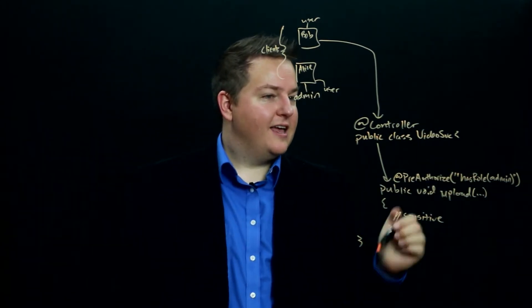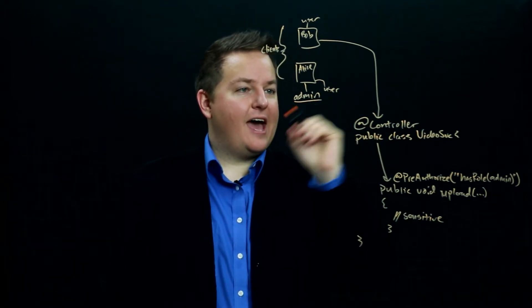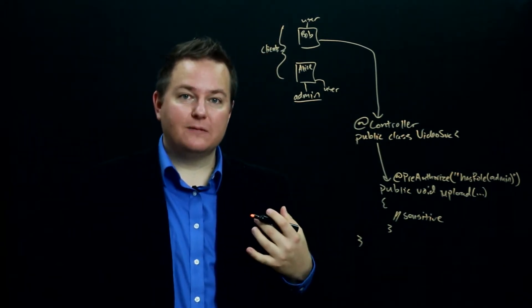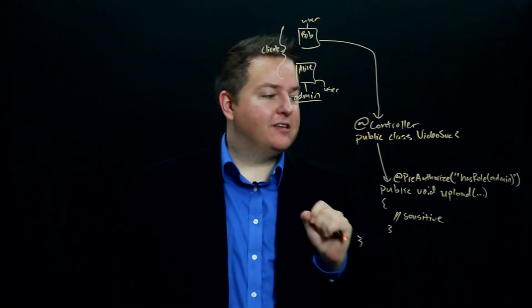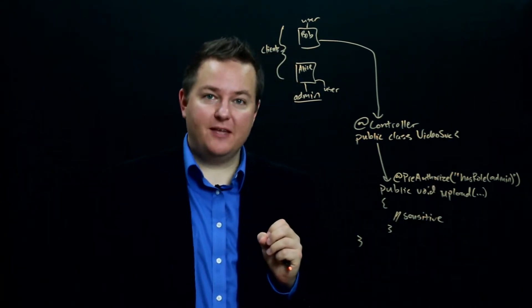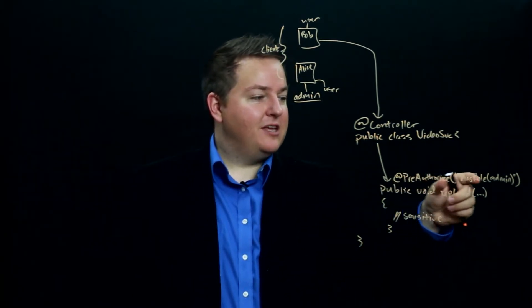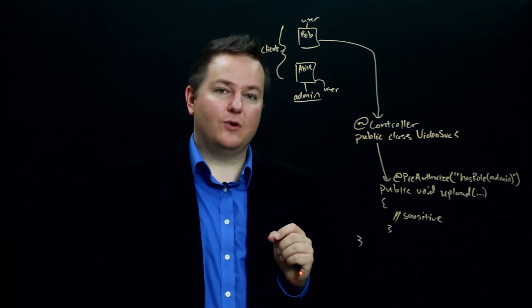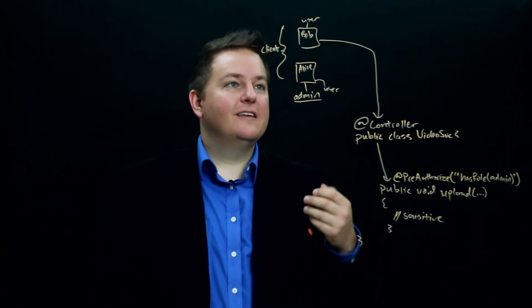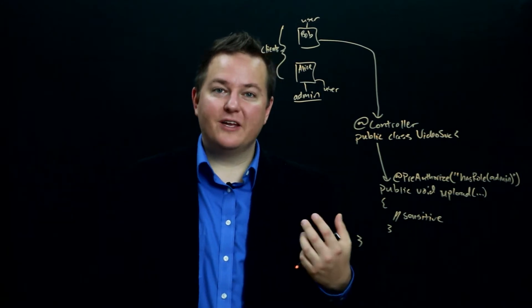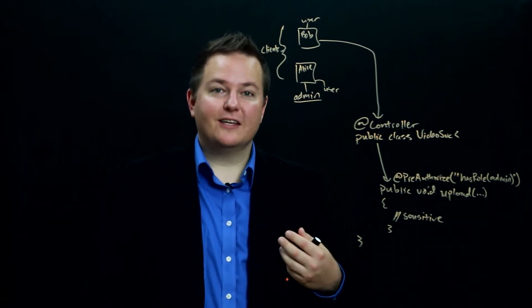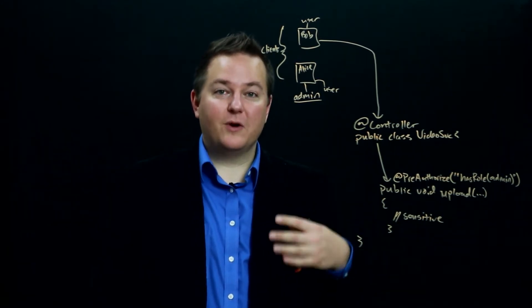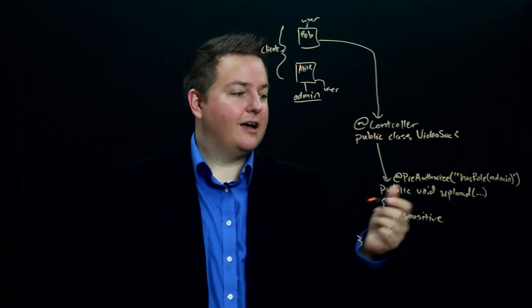What Spring will do is it will check that the user that's associated with the client sending this request has the admin role associated with it, and if it does it will go ahead and invoke the method. If that user does not have the admin role associated with it then it will block the request and send back the appropriate HTTP response code like unauthorized or whatever the particular code is that you set it up for.